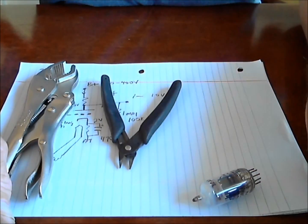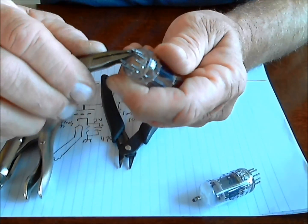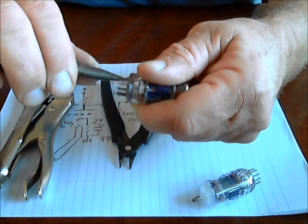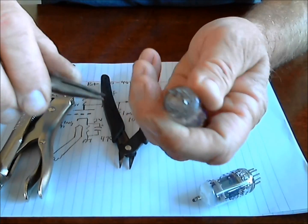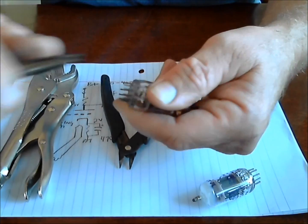When you get the pins fairly straight, if you do have a pin straightener, if you get them straight enough, then you can insert it in the pin straightener and let that do the rest of the work. But if you don't have one, you can just pretty much eyeball it and get them straight and take out the kinks at the same time.